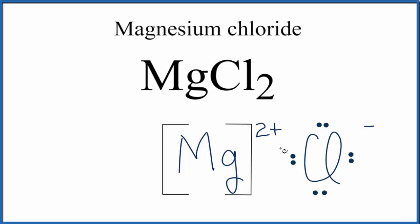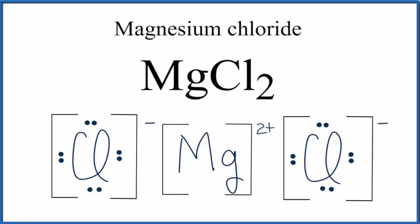Again, let's put brackets around it. Since we have two chlorine atoms, let's just copy this one and stick it on the other side. That gives us our final Lewis structure for MgCl2, magnesium chloride.